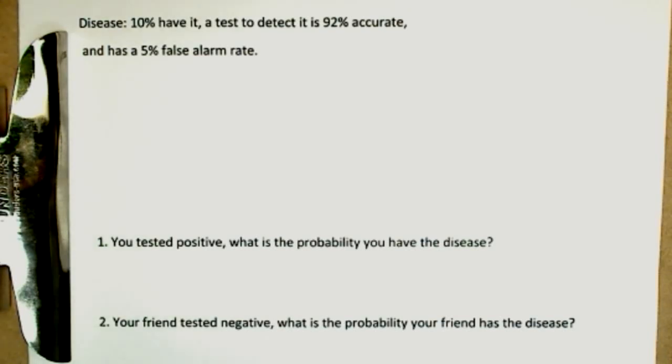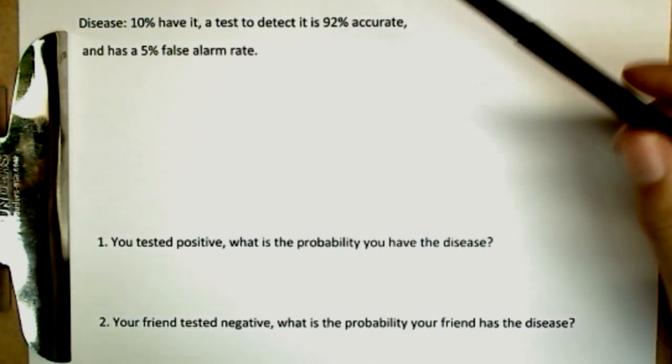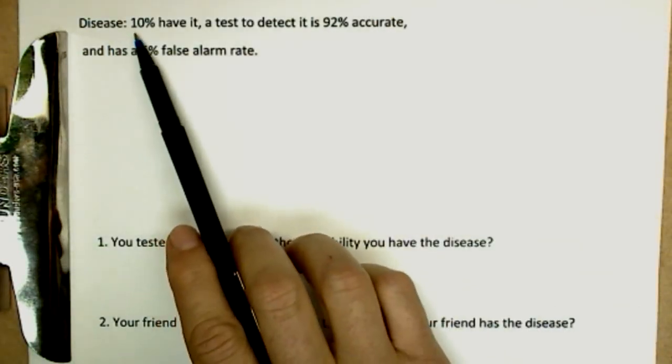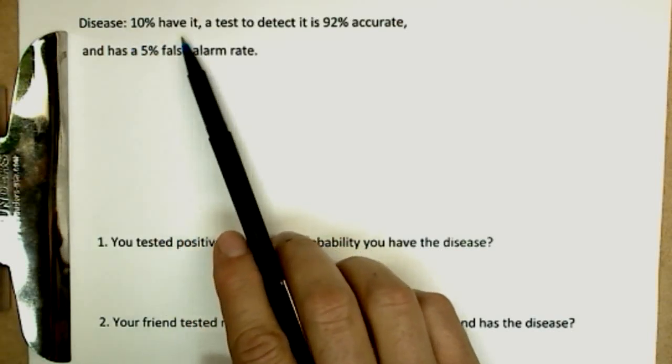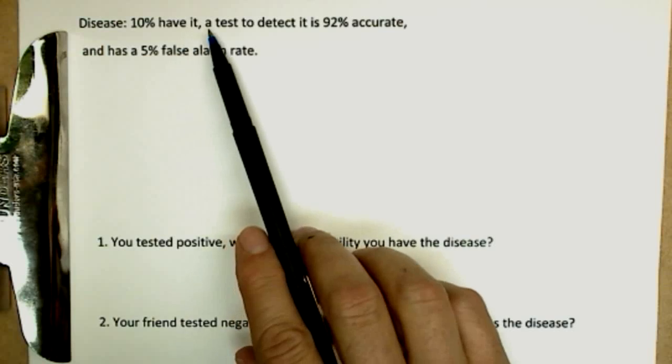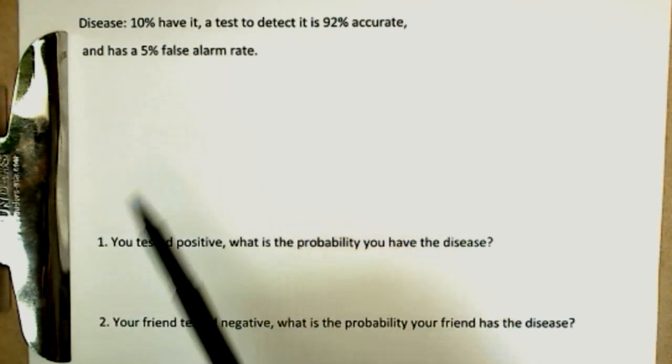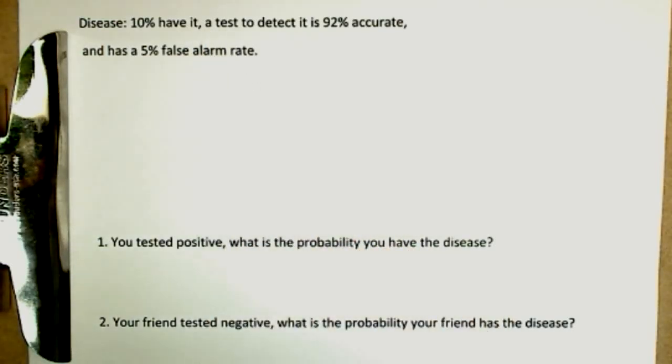Now we have another problem with probability. This is actually a very good applied problem. So let's set up the problem. There's a disease out there and we have estimates that 10% of the population have the disease. Now we have a test to determine if you have the disease. You can think of this as a swine flu perhaps, except that I think a lot more than 10% have that.